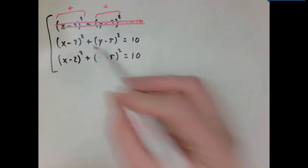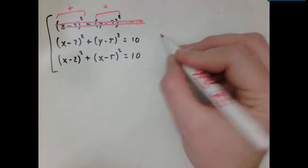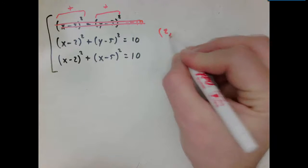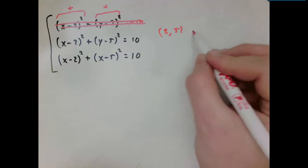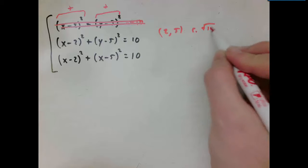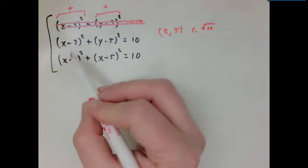What about this one? So this one has the form of a circle, and the circle is centered at 2,5, and its radius is root 10. And we know that from the last video.